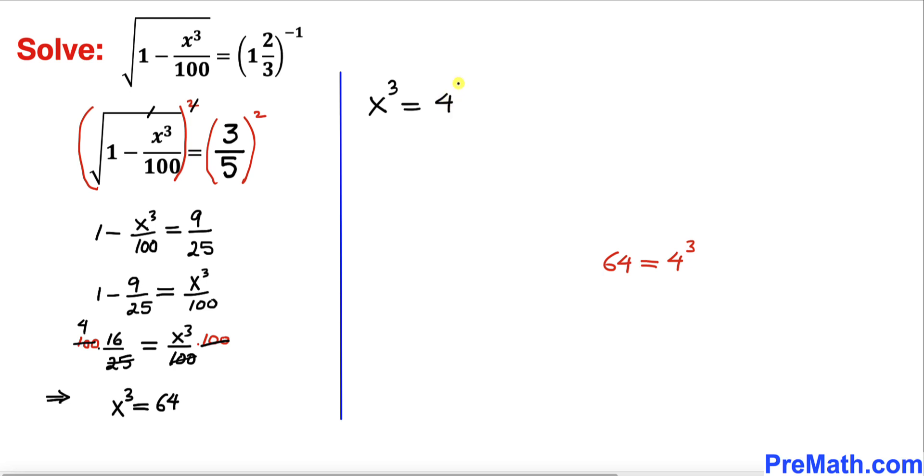Now let's take the cube root on both sides. We can see that the cube and cube root undo each other, so we get x equals 4 as our solution.